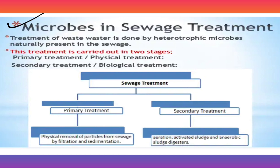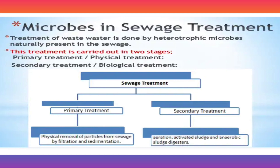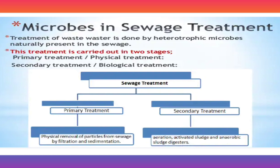The primary treatment is called physical treatment — remember PP: primary and physical. Secondary is biological. In primary treatment, there is physical removal of particles from sewage through filtration and sedimentation. Filtration removes floating debris on top, and sedimentation causes solids to go down, forming the grit. The upper liquid part is called effluents.